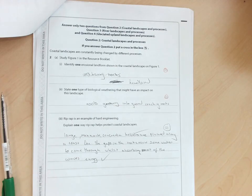Right, now we're looking at the second video on Laura's exam paper. We're now on the coast. Identify one erosional landform shown in the coastal landscape in figure one. There's figure one.